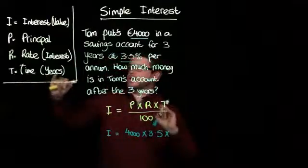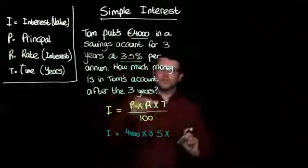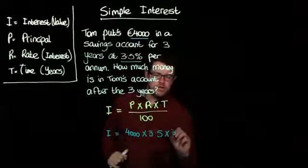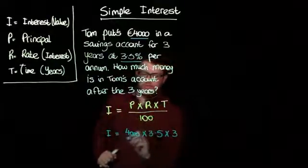And that's multiplied by the time. As we said, time is given in years for this formula. And that's three years. And that's all divided by 100.